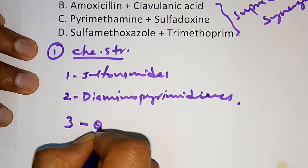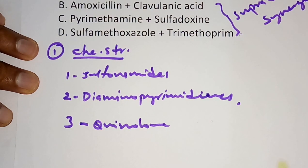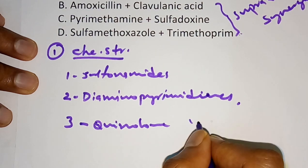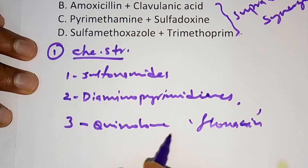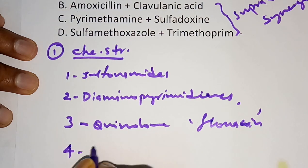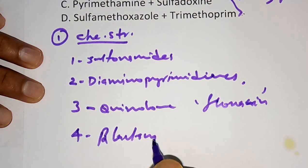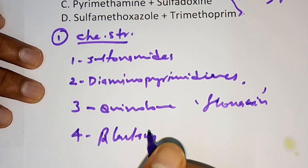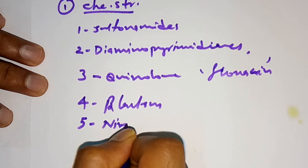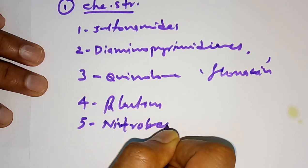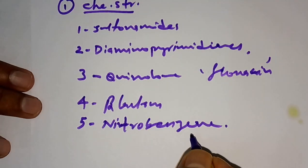Group three is quinolones — examples include nalidixic acid, norfloxacin, ciprofloxacin, gatifloxacin, and moxifloxacin. Group four is beta-lactam antibiotics — these include penicillins, cephalosporins, monobactams, and carbapenems. Group five is nitrobenzene derivatives — the example is chloramphenicol, which is an important one to remember.